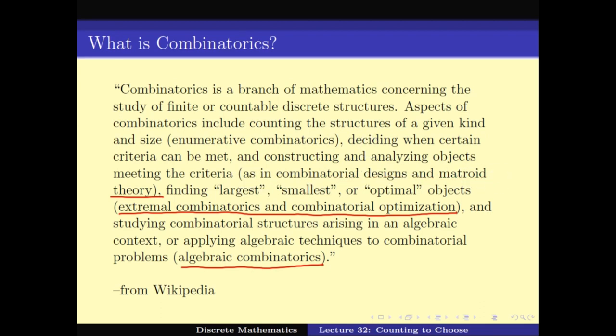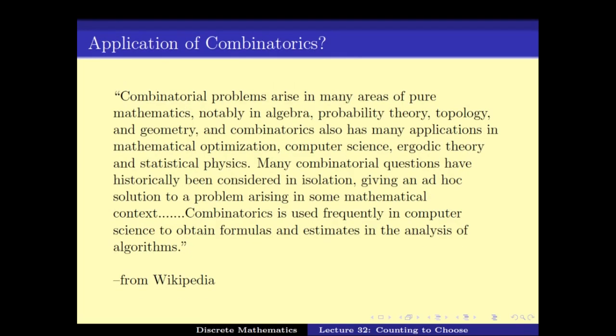Why do we need Combinatorics? As Wikipedia says, combinatorial problems arise in many areas of pure mathematics, notably in Algebra, Probability Theory, Topology, and Geometry. Combinatorics also has many applications in Mathematical Optimization, Computer Science, Ergodic Theory, and Statistical Physics. Many combinatorial questions have historically been considered in isolation, given an ad hoc solution. Combinatorics is used frequently in computer science to obtain formulas and estimates in the analysis of algorithms.